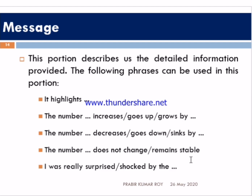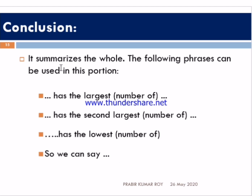The message is the body of the writing. This portion describes the detailed information provided. The following phrases can be used: 'it highlights,' 'the number increases,' 'goes up,' 'goes by.' The conclusion summarizes the whole and gives a clear idea of the complete information in a short message. Phrases used here include: 'this is the highest number,' 'this is the second largest number,' 'that is the lowest number.'